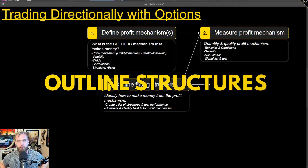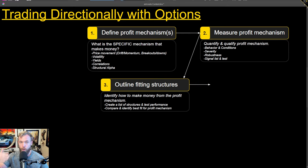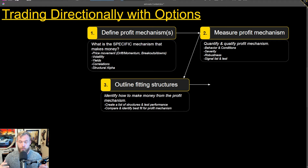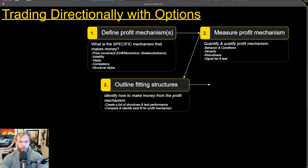Now we get to use options and look at what structures make the most sense for what we're trying to accomplish. As you'll note when we go through an example in a minute, there are trade-offs to every single options structure. That's the beautiful part — you get a chance to fit things so that it makes sense based on your specific thesis. If we have things that are expected to move a whole bunch, we probably don't want to sell premium because we're going to miss out on a lot of profit.